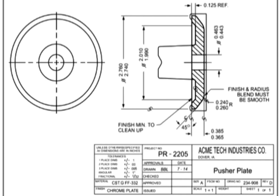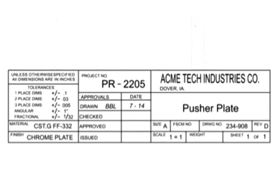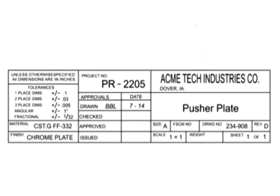Machine drawings can be developed using a cast part as the original material. In this drawing, the casting from the last example was used as the starting material. This machining drawing will remove material from the original casting and add the finishes required to produce a final product with its own unique part number. Only the dimensions necessary to convert the original cast part into the new part are required; the casting dimensions are not shown.